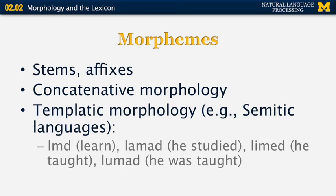For example, in Semitic languages — here's an example from Hebrew. The template for 'learn' is L-M-D, just a sequence of three consonants. But if we want to conjugate or inflect it, we can get different forms: L-M-A-D means 'he studied,' L-I-M-E-D means 'he taught,' and L-U-M-A-D means 'he was taught.' By inserting different sets of vowels in different places, we modify the consonant template to form different words.